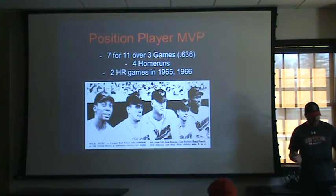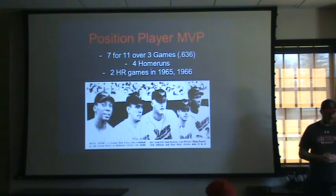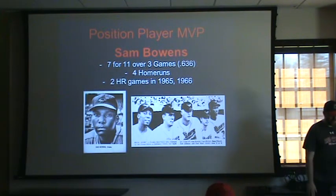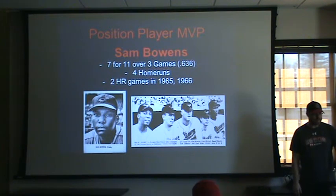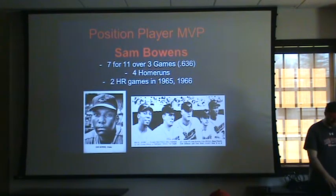For position player MVP, it wasn't a guy I was expecting. There was a player who went seven for eleven over three games for a .636 average, with four home runs including two two-home-run games in 1965 and 1966. That's Sam Bowens, the gentleman on the left in the photo. His four home runs are the most in the series — no one else had more than two. There was a total of six two-home-run games, and he obviously had two of them in back-to-back years. I think Sam Bowens is clearly the offensive star, even though he only played in three games.